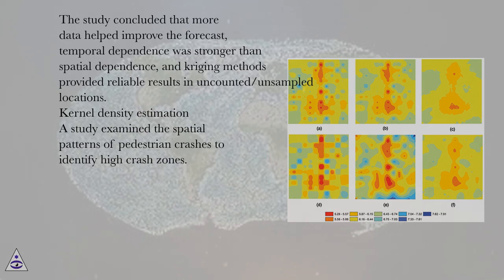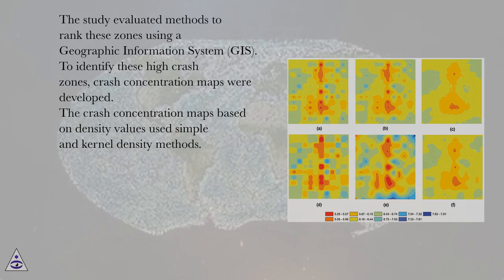Kernel Density Estimation. A study examined the spatial patterns of pedestrian crashes to identify high-crash zones. The study evaluated methods to rank these zones using a Geographic Information System, GIS. To identify these high-crash zones, crash concentration maps were developed.